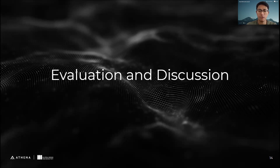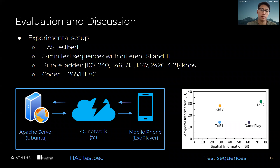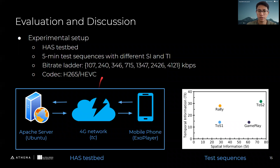In the evaluation and discussion section, we will present the performance of our proposed method compared to other existing ABR algorithms. For the experimental setup, we have a testbed that includes a server and a mobile phone connected through a 4G network. We also have four test sequences with different content, each with five minutes length. The bitrate ladder used in this paper includes quality levels from 107 kbps to 4,121 kbps. The videos are encoded by H.265.